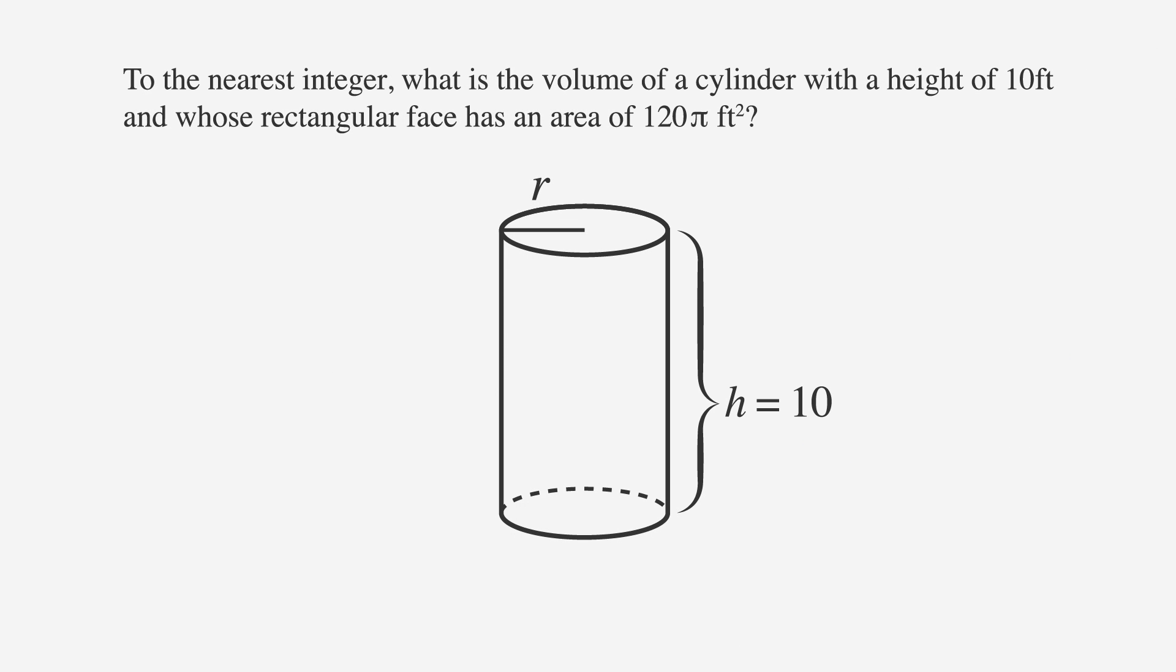To the nearest integer, what is the volume of a cylinder with a height of 10 feet and whose rectangular face has an area of 120 pi square feet? As usual, we'll underline the facts and circle the key terms.